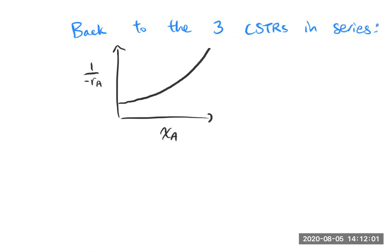So back to the three CSTRs in series. I'm going to draw one more Levenspiel plot here. 1 over minus r_A, X_A. And here we have, again, because of our normal kinetics, a curve like that. We wanted to get to this target conversion, which from that previous example was 0.875.